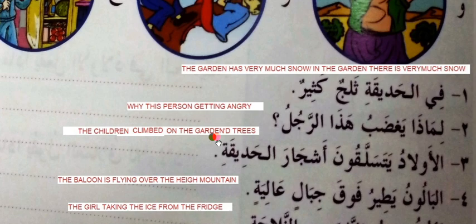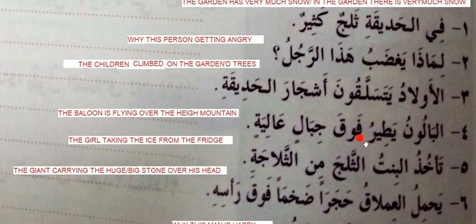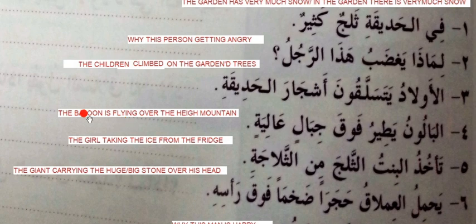Al-balon yatiru fawqa jibalin aliya — the balloon is flying over the high mountains. Jibal is the plural of jabal, meaning mountains. Fawq means over. They use yatiru for the masculine noun. Because of the feminine noun they are using ta-, so takhudhu — the girl is taking the ice from the salaja, the refrigerator or fridge.